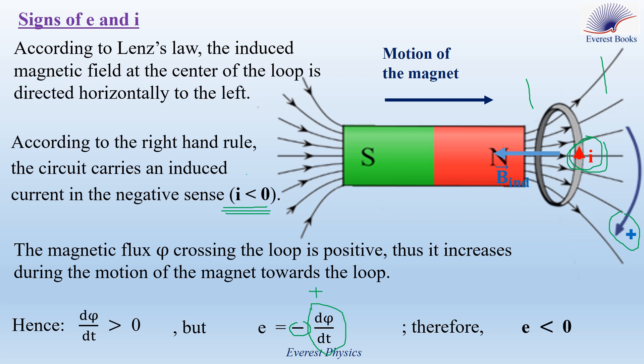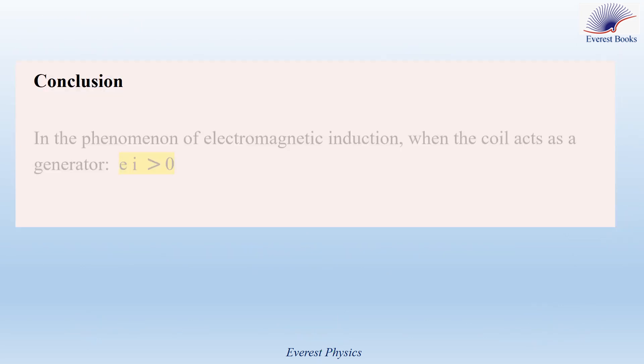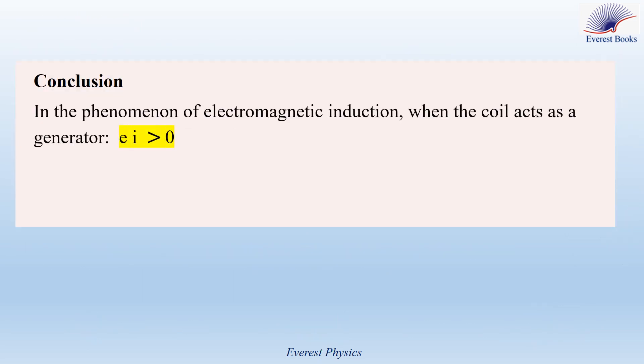I is negative and E is negative, so E and I have the same sign. We can conclude that in the phenomenon of electromagnetic induction, when the coil or the conductor acts as a generator, then E times I is always positive.